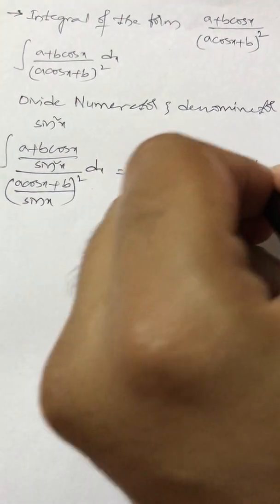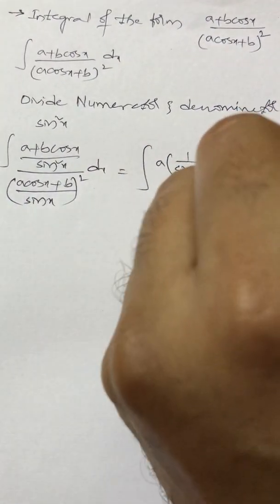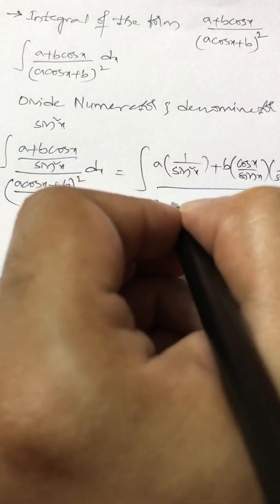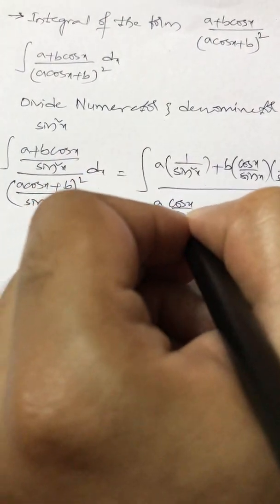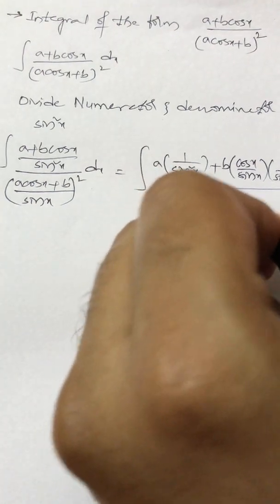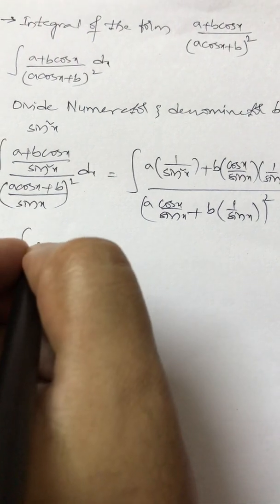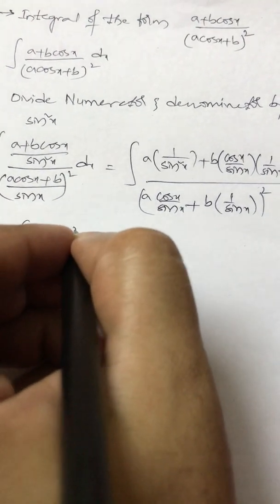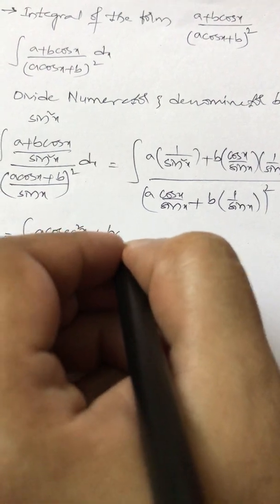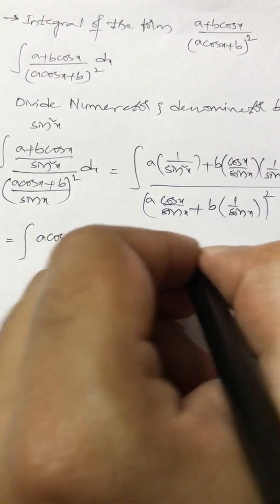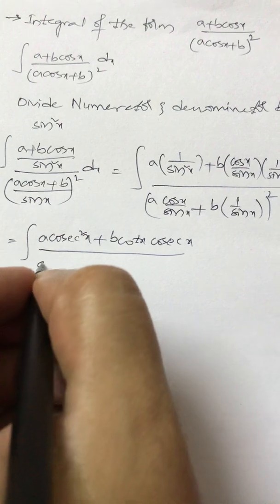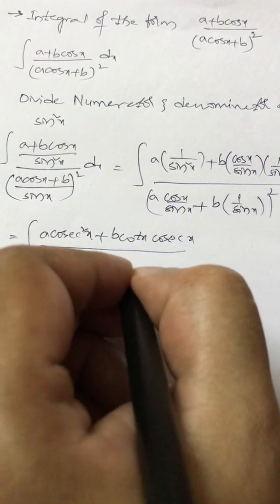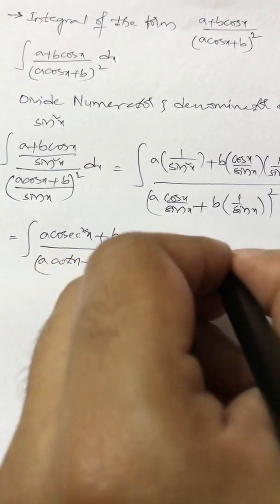This can be written as: a · (1/sin²x) + b · (cos x/sin x) · (1/sin x), all divided by [a · (cos x/sin x) + b · (1/sin x)]² dx. So this becomes a · cosec²x + b · cot x · cosec x, divided by (a cot x + b cosec x)² dx.